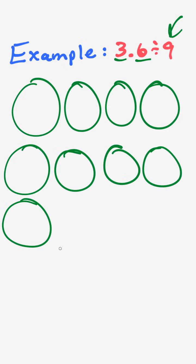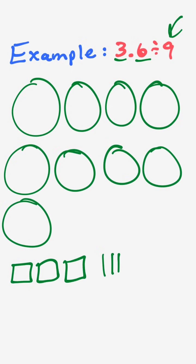Here we have three wholes — I draw those on the outside: one, two, three — because I don't have enough. And six tenths: one, two, three, four, five, six — all drawn on the outside.